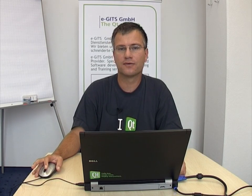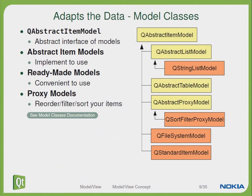Let's have a look at Qt's classes for model implementation. All models are derived from QAbstractItemModel. But Qt also offers you some ready-made models which are convenient classes for you to use. It also gives you the choice of implementing proxy models, which are very useful for filtering or sorting your data.